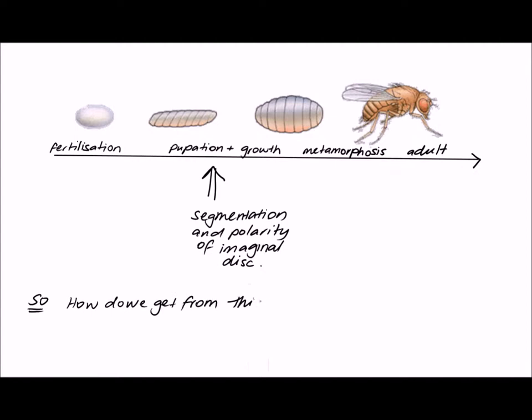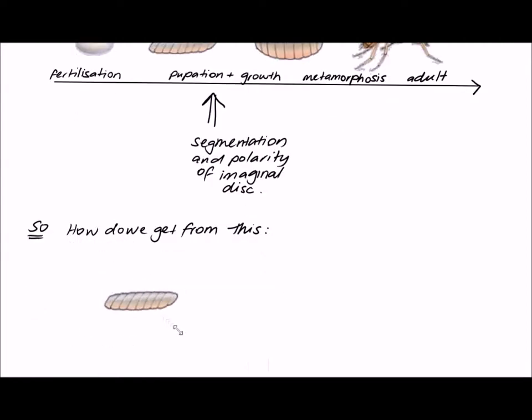Let us proceed to answer the main question here. How does the Drosophila wing imaginal disc transition from a sack of cells to a patterned flat wing? To answer this, we must first have a look at the four different morphogen gradients that contribute to wing patterning as a whole.